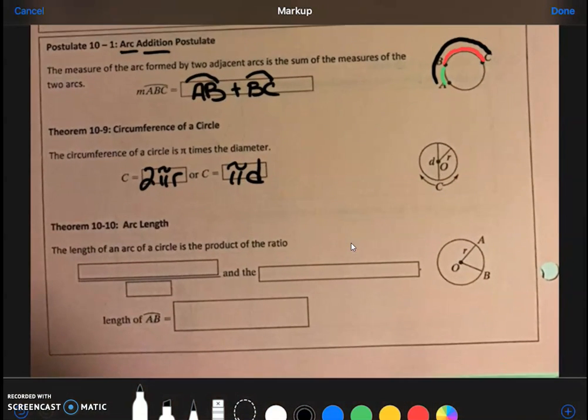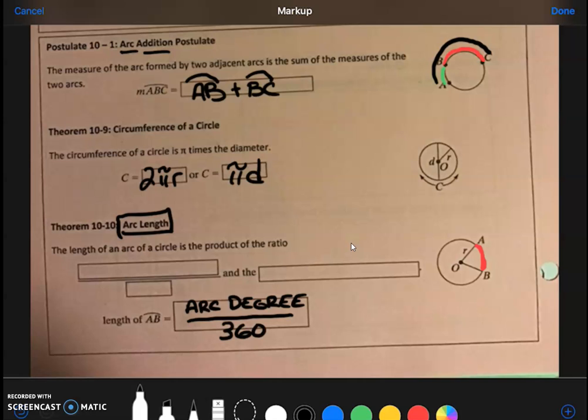Okay, and then finally, the most important theorem of the day is going to be arc length—not arc degree, arc length. So if I want to know the physical distance of this red arc here, how long is it in inches and centimeters? Here is the formula: you would take the arc degree (that could be 90 degrees, 80 degrees, who knows) divided by the entire circle. How many degrees is an entire circle? Well, that's 360. That would give you the percentage—this fraction would give you the percentage of the circle that is red.